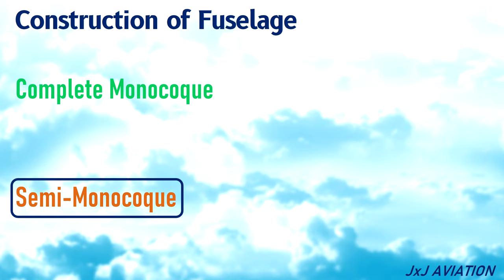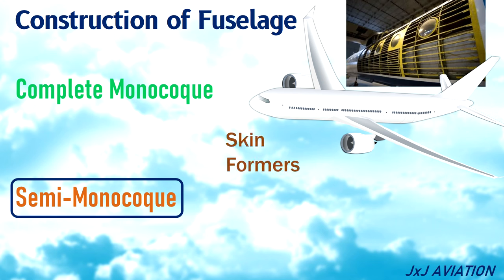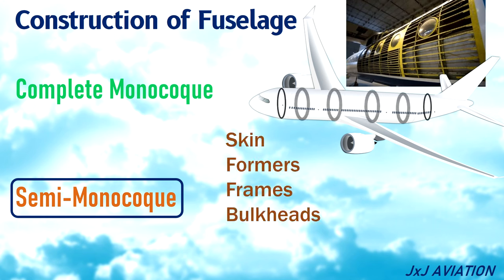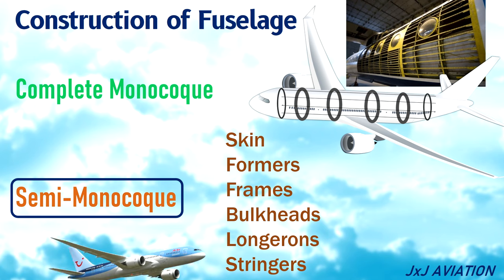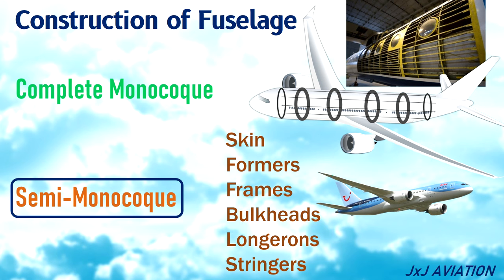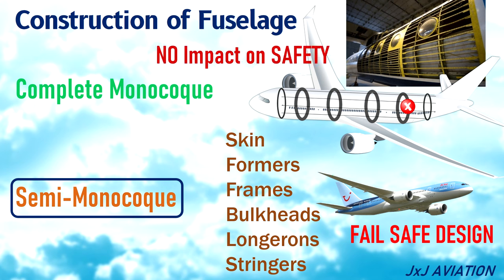A semi monocoque type of fuselage consists of skin, formers, frames, bulkheads, and longitudinal members called longerons and stringers. Here, the skin is not the primary load carrying member; the load gets distributed to these different structural components. Most modern aircraft have a semi monocoque type of fuselage since it is a fail safe design. This means that failure of a single structural component will not have an impact on the safety of the fuselage.